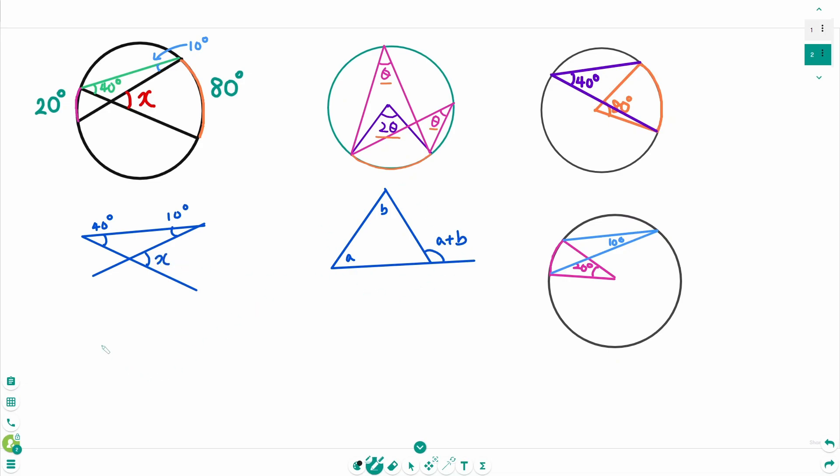Use this formula. x equals 40 degrees plus 10 degrees, which is 50.